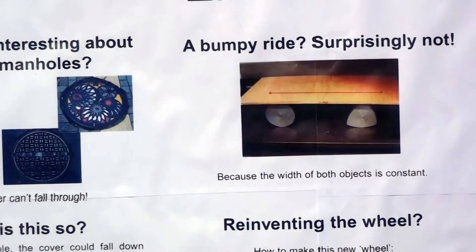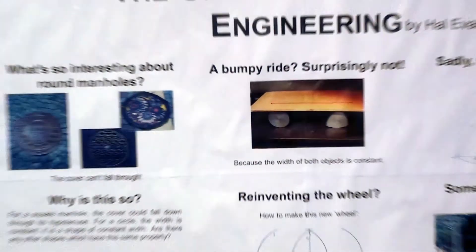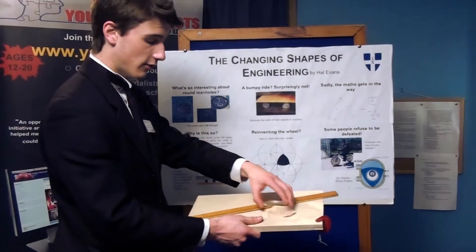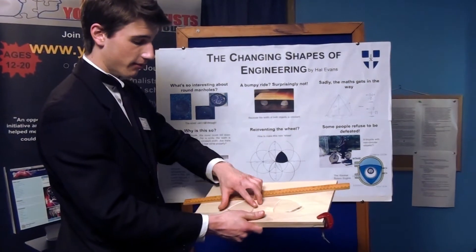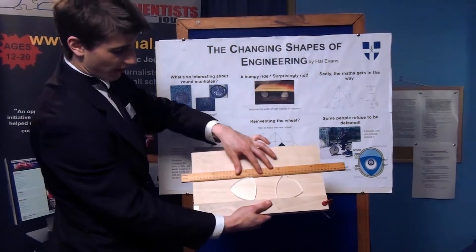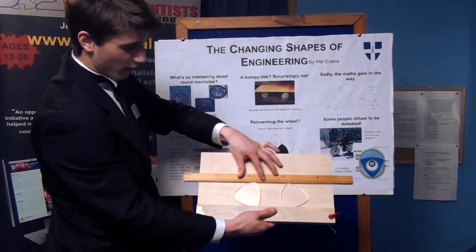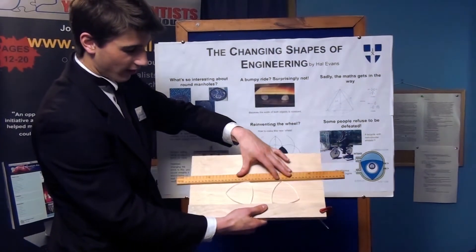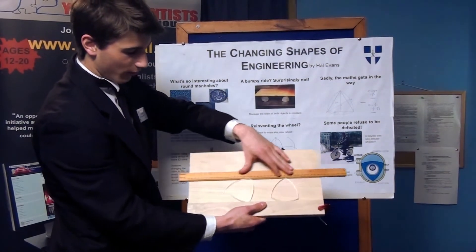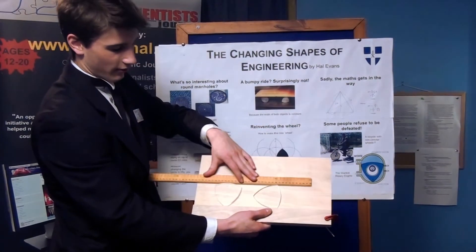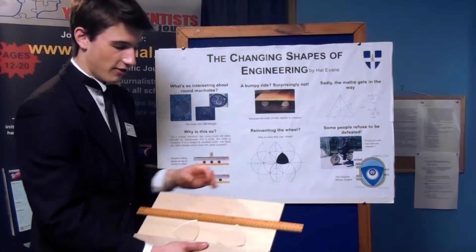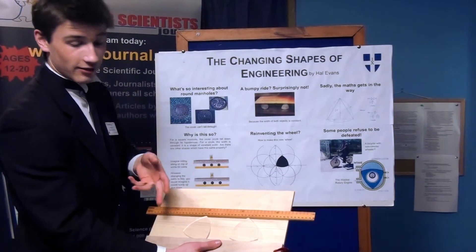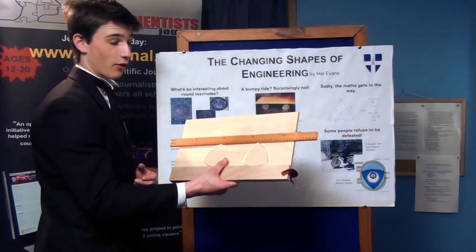I have actually made two of these shapes. And as you can see, the ruler once again stays parallel to the floor - it has to rotate. So it's clear and obvious that these two shapes have a constant width.